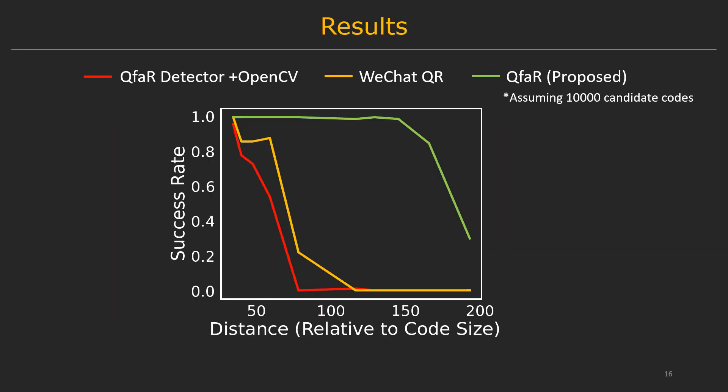Now let's look at the results. We compare QFaR with two baselines. One is a traditional QR code decoder available in OpenCV — since their detector fails most of the time, we replace it with our detector. Another baseline is WeChat QR code, which uses a neural network to detect the code and then applies a super-resolution network to upscale the image, but is still based on conventional QR code decoding. We compare them on simulated data at different distances, and QFaR's performance is significantly better than the baselines because of location-guided decoding.